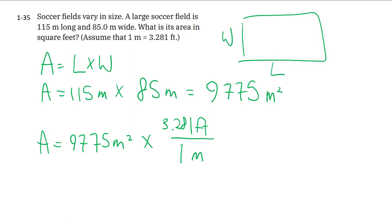But instead of just one meter, we have meter squared. So what we can do then is we square the entire factor so that underneath, we actually have meter squared and on top we end up with feet squared. And it's this bracket square business.